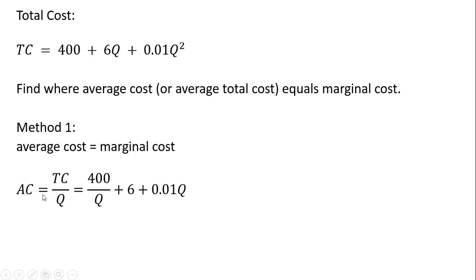So let's get average cost. Average cost is total cost divided by quantity. So for the total cost equation I'm going to divide through by q. 400 divided by q, 6q divided by q is just 6, and 0.01q squared divided by q is just 0.01q. So take total cost, divide it through by q, and you'll now have average total cost or average cost.